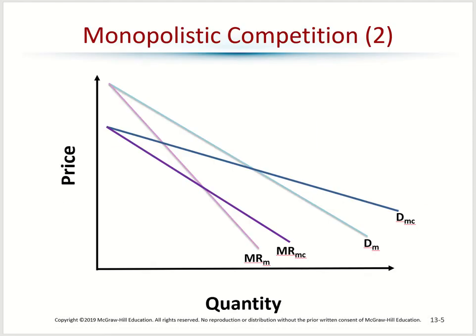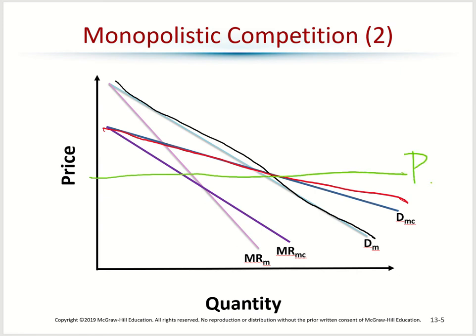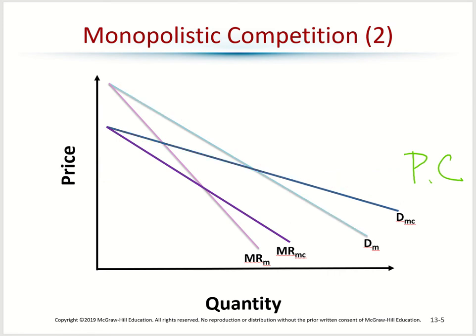Let's look at the demand curves comparing monopolistic competition and monopoly. For monopoly, consumers are very inelastic — there are no choices — so you have a very steep demand curve. For monopolistic competition, there is a competition component, so the demand curve is somewhat flatter. And as you remember, perfect competition has a very flat demand curve. This depends on the degree of competitiveness in the marketplace.